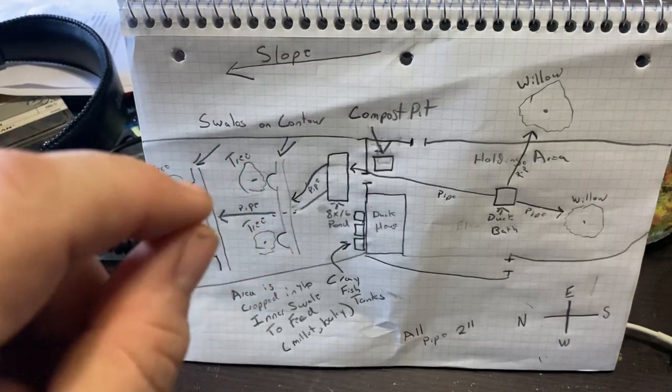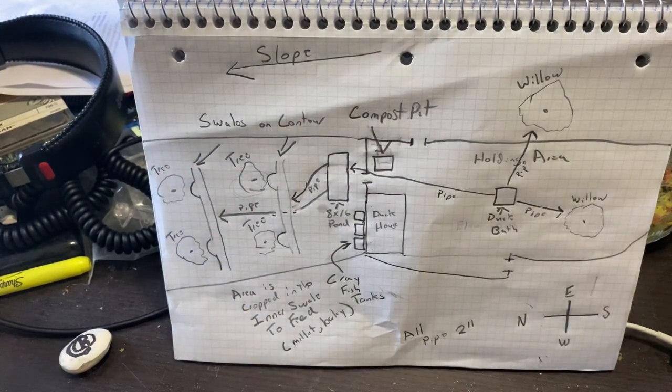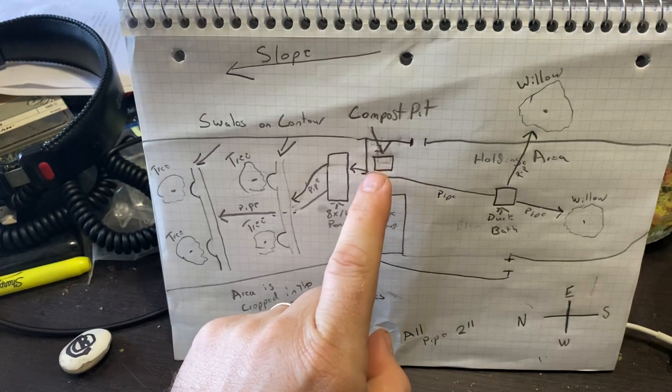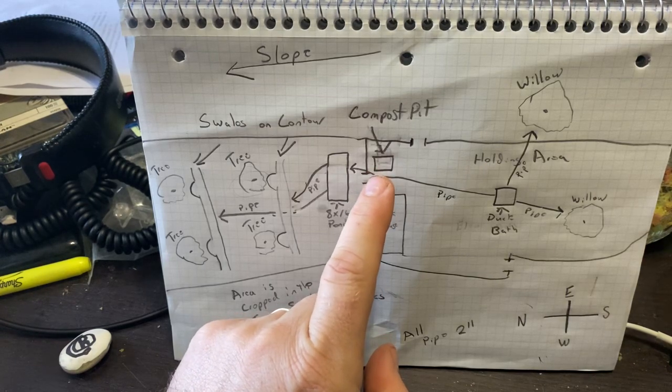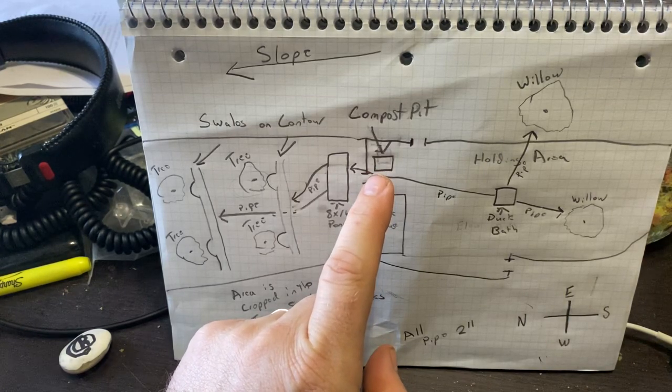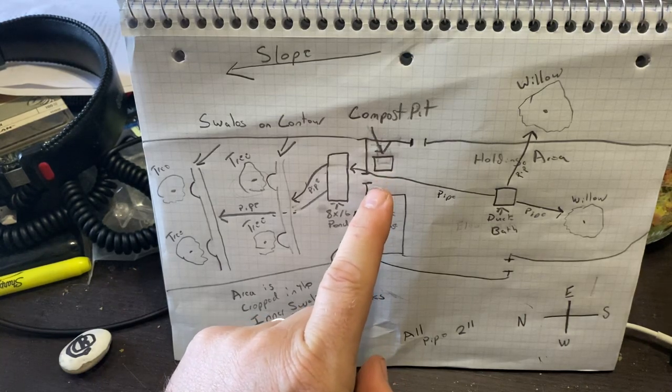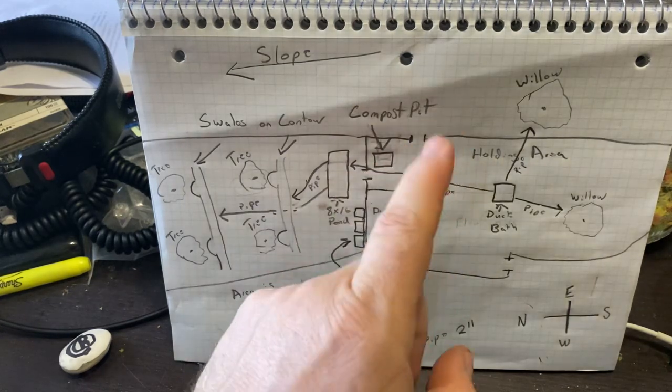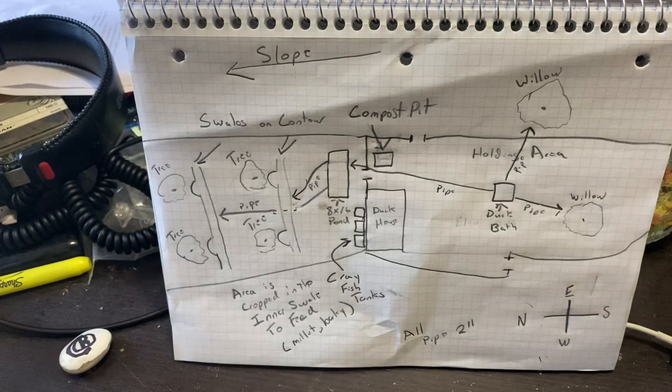So here's our compost pit. The goal is let's grow some water hyacinth, feed it to ducks in a location where whatever they leave behind combined with kitchen scraps, carbon sources, etc. naturally compost. When it's full we just empty it out, pile it up, let it finish, and start the process over again.